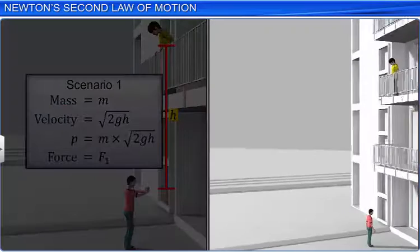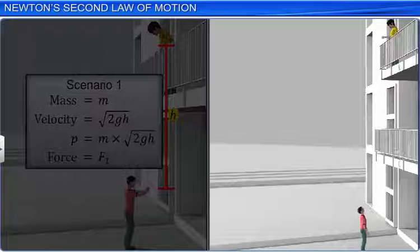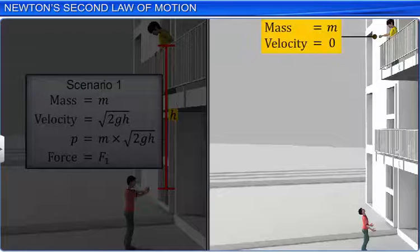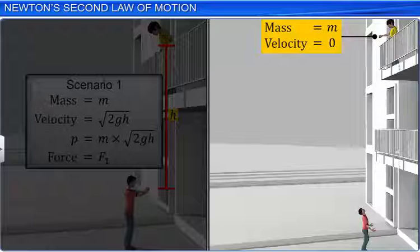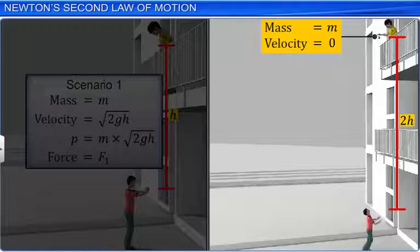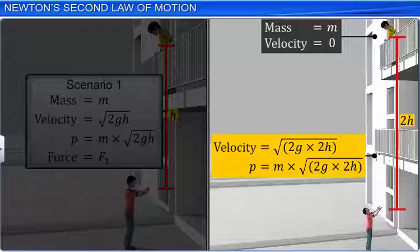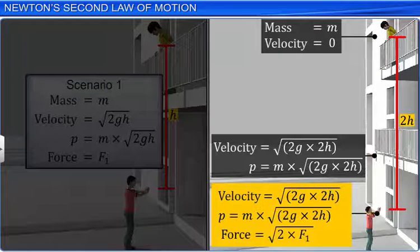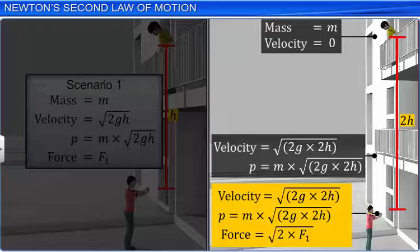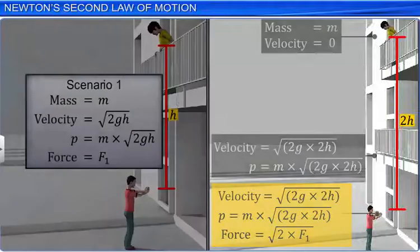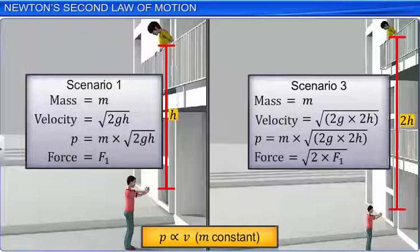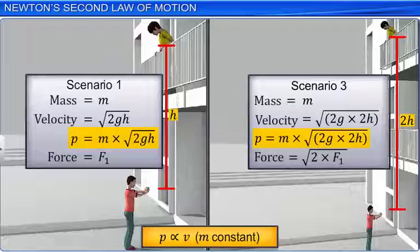In the same scenario, if a ball of mass M is dropped from the second floor balcony from a height 2H, its velocity increases and therefore its momentum also increases. Consequently, more force is required to catch the ball. Here, the momentum increases due to an increase in velocity.